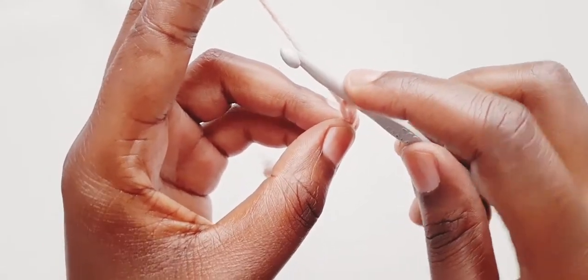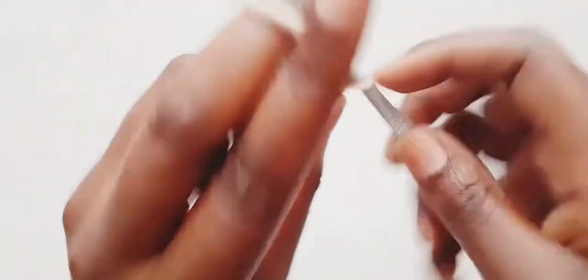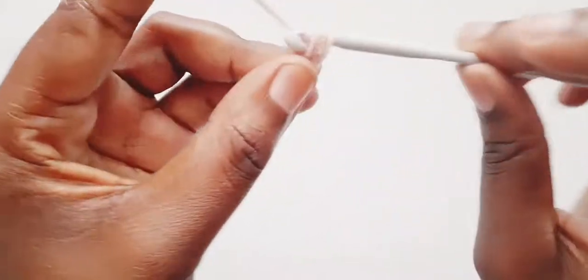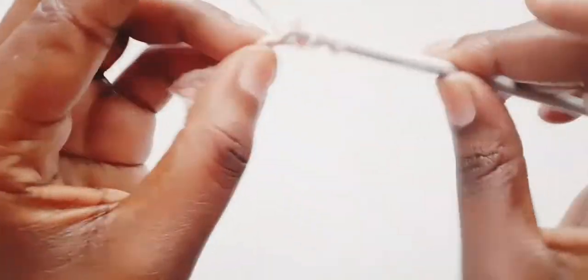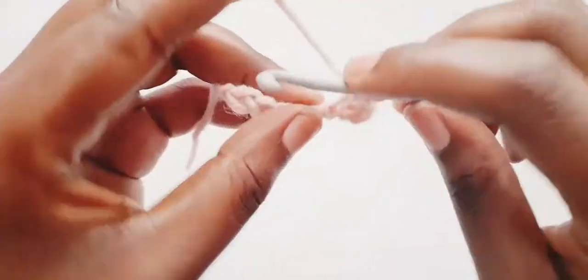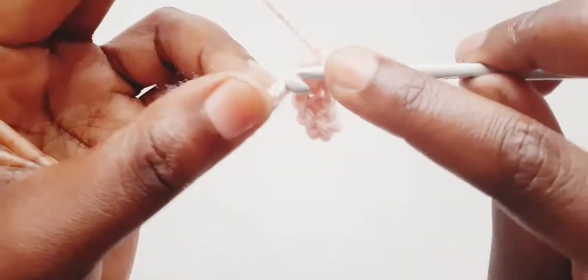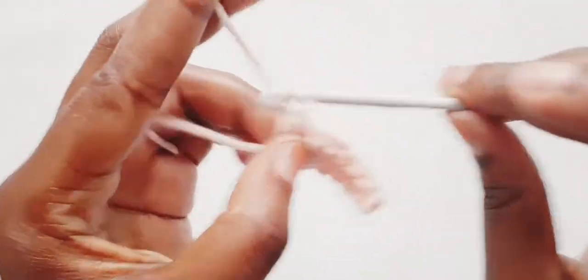To begin row one, we are going to make seven half double crochets. So we yarn over, insert our hook in the chain that we blocked off, pull through. That's one, two, three, four, five, six, seven. Okay, at the end here we're going to chain one and turn our work.